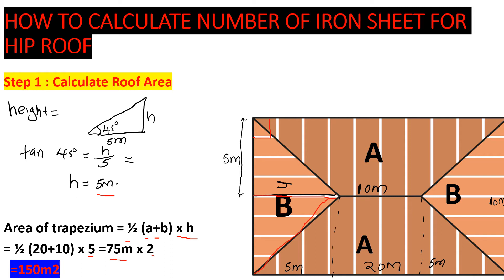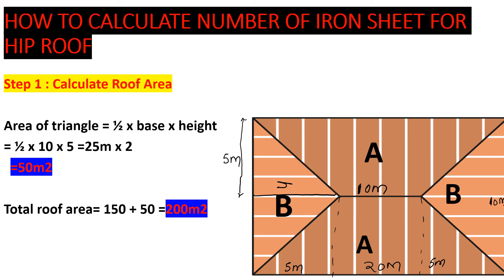Now let's find the area of the triangles — section BB. Area of a triangle = ½ × base × height. The base is 10 m and the height is 5 m, giving 25 m². We have two triangles, so that's 50 m². Total roof area = 150 m² (trapeziums) + 50 m² (triangles) = 200 m².